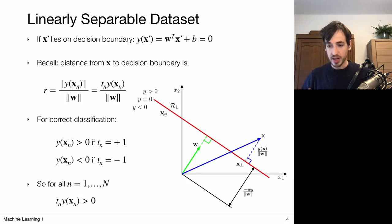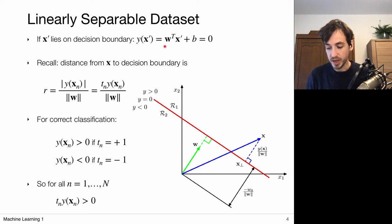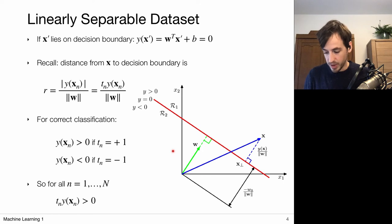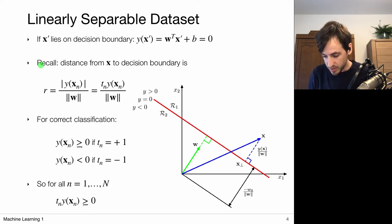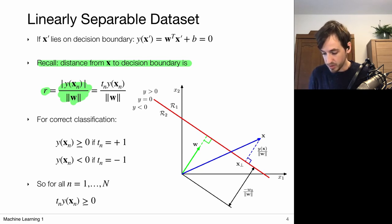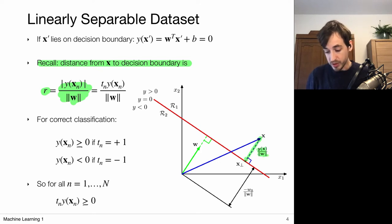The decision boundary is given by all points for which y(x) = 0. Points on the positive side get the positive class; negative evaluations get the negative class. From the video on discriminant functions, the distance r from a point x to the decision boundary is given by |y| / ||w||. So the distance to the decision boundary scales with the value y. To maximize the distance from all points to the decision boundary, we maximize this quantity.